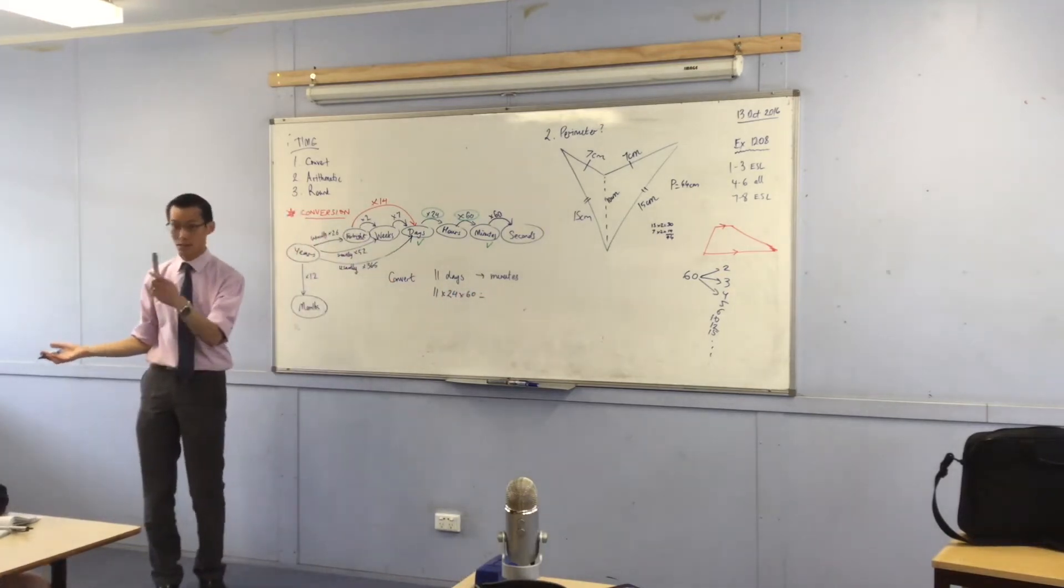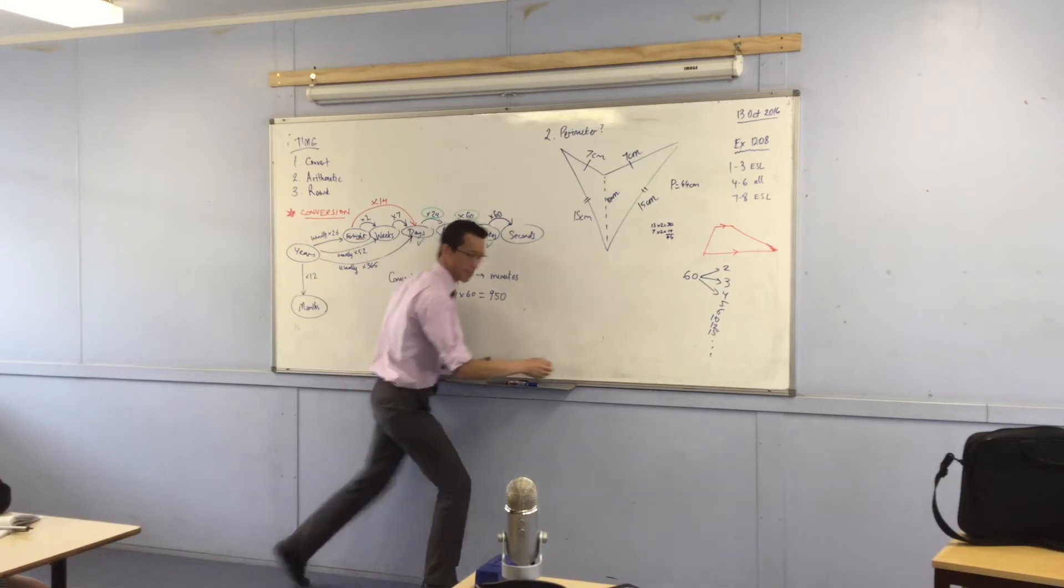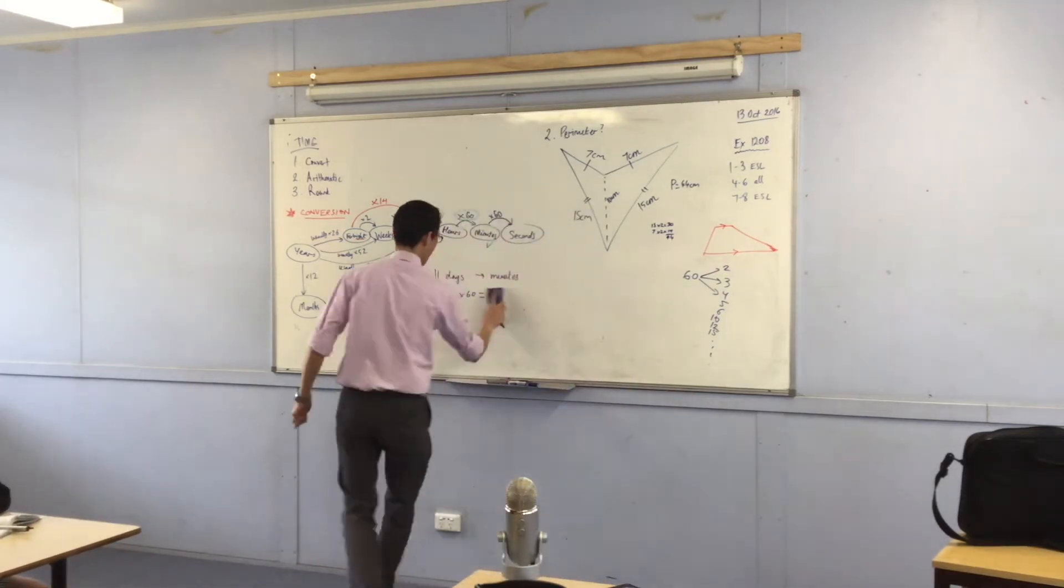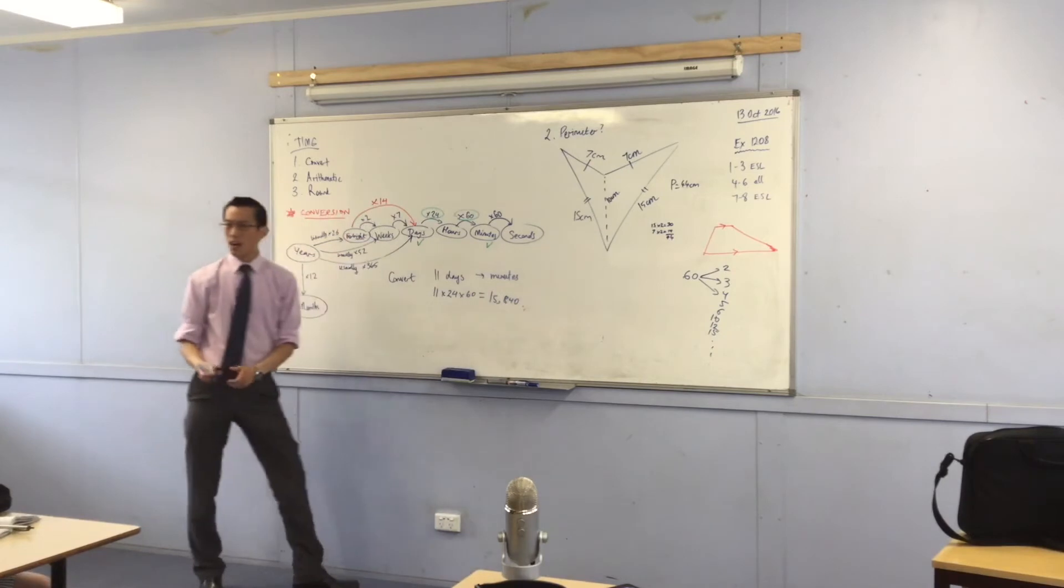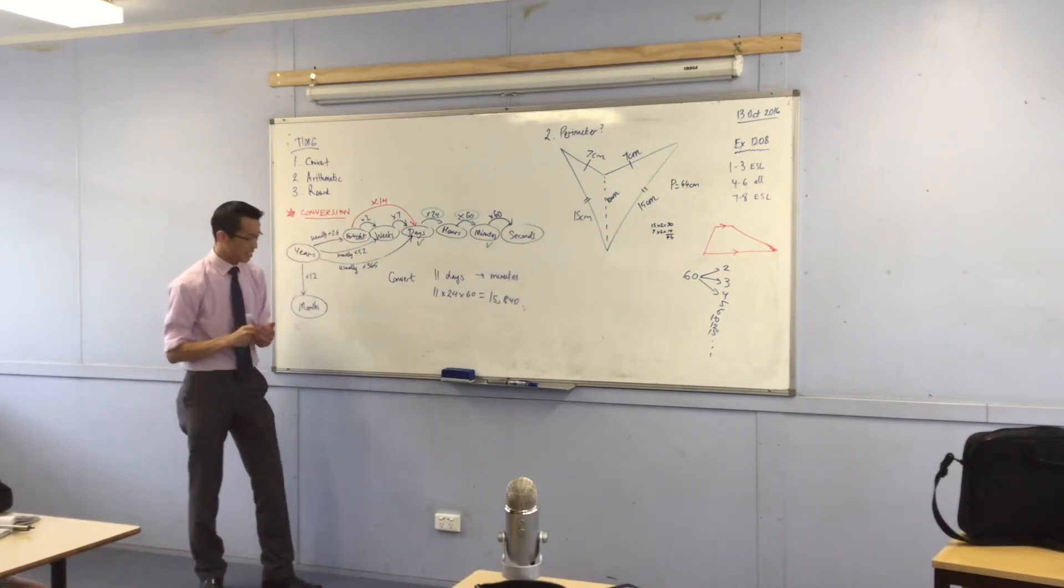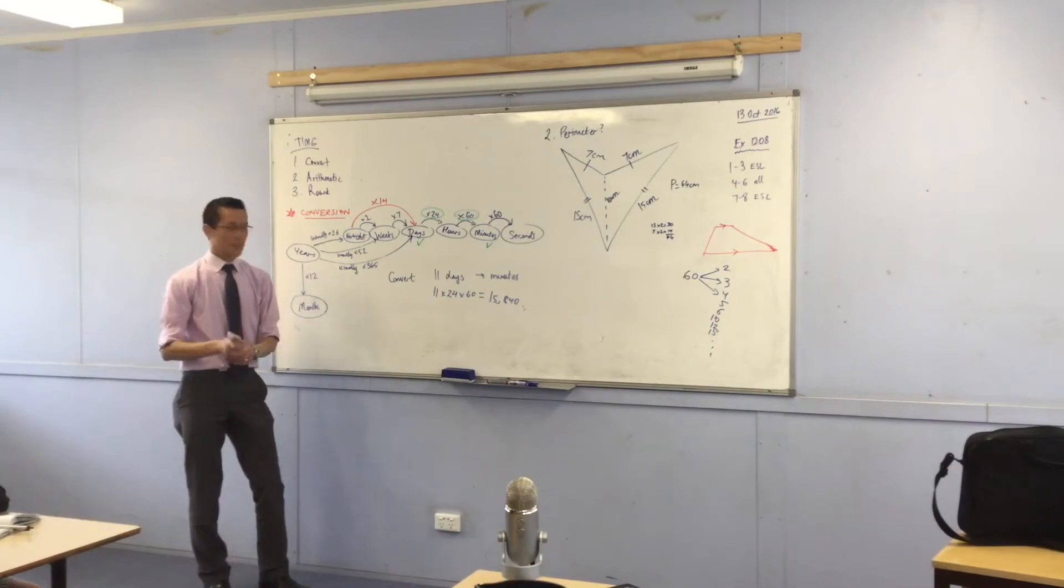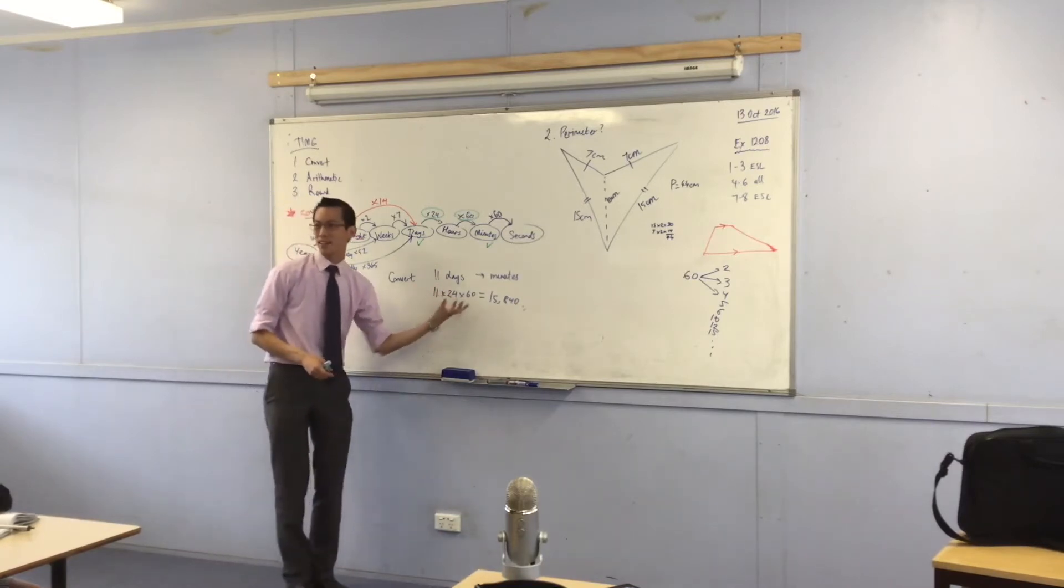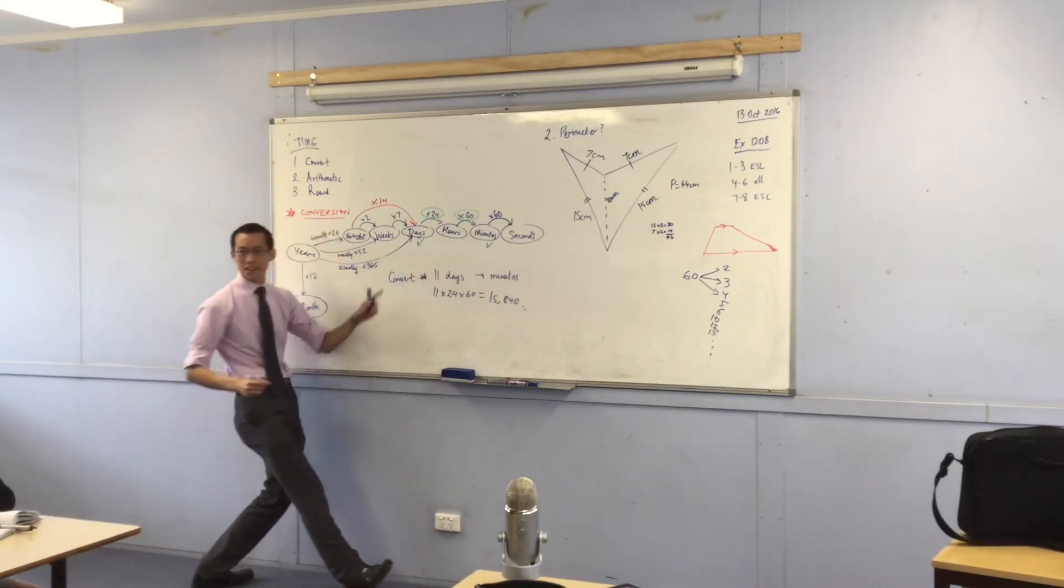So the answer is? 15,840. Thank you. Okay, now 11 times 24 times 60. That looks about right to me. Okay, so that is the number of minutes in 11 days. Okay, so that's good. I can go from big units to small units. So there's my first example.